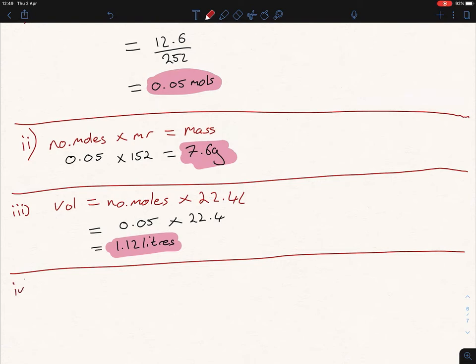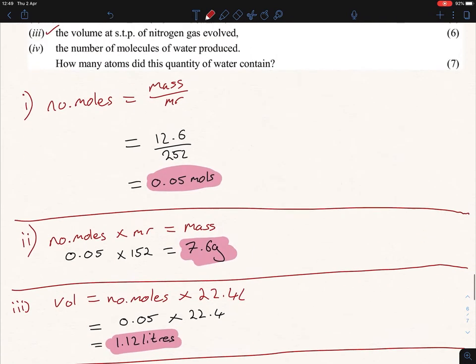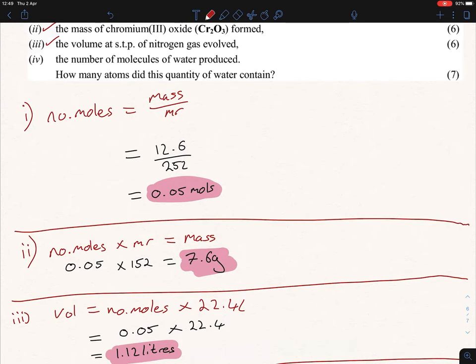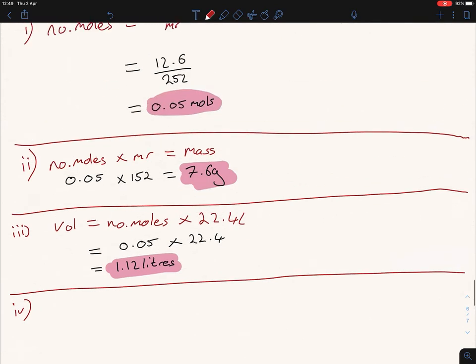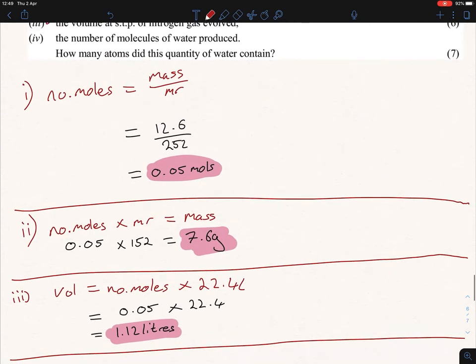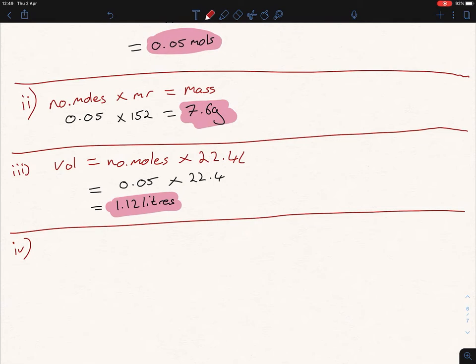Last part now, IV. The number of molecules of water produced, and then underneath that there's a sub-question of how many atoms did this quantity of water contain. Now, let's start off with the first one, the number of molecules of water produced. Well, this always brings us back to our formula there, or in terms of Avogadro's number. So all you have to do there for that is, and actually, it is asking you to find out the number of molecules. So we put in our formula there, so our number of molecules equals Avogadro's number multiplied by the number of moles.